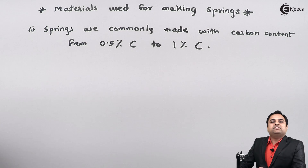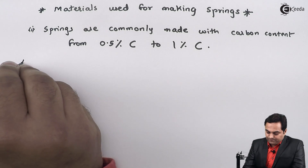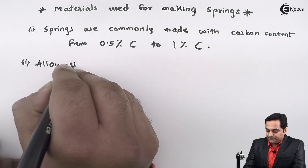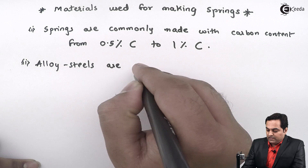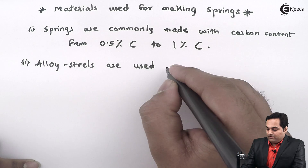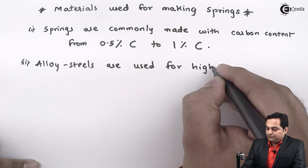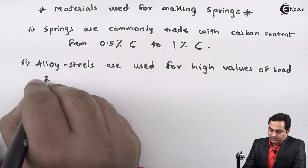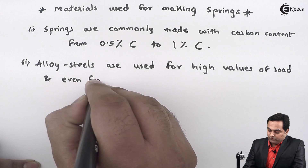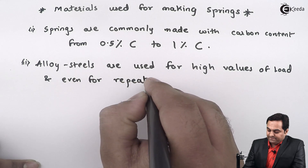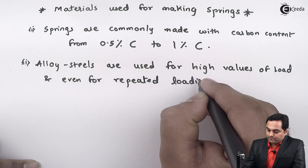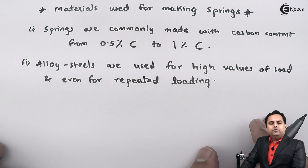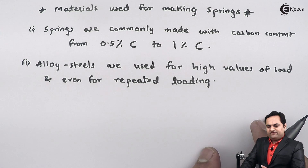Next, alloy steels are also used. Alloy steels are used for high values of load and even for repeated loading. So alloy steels are preferred when the spring is subjected to high loads or if the load is repeated.